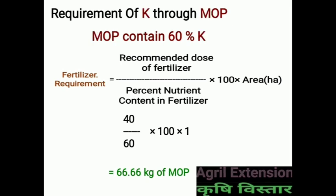Similarly, for the calculation of requirement of Potassium through MOP, we know MOP contains 60% Potassium. Using the formula, fertilizer requirement equals recommended dose divided by percent nutrient content into 100 into area in hectares. Putting in the values: 40 kg divided by 60, into 100, into 1 hectare. By solving this equation, we get 66.66 kg of MOP.